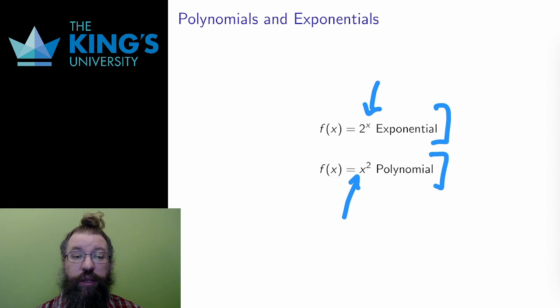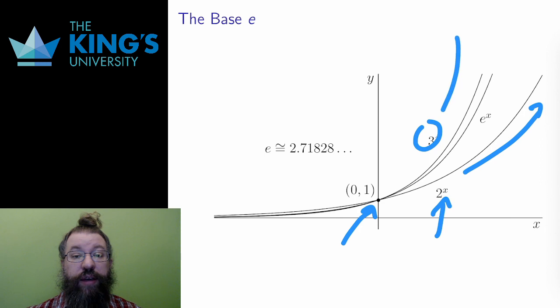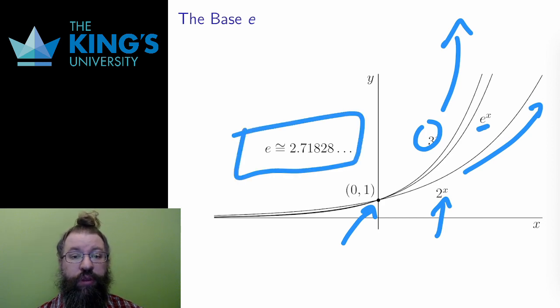I've said that any positive number a can be the base of an exponential. The larger the base, the faster the exponential grows, though all of them still start at the point 0, 1. On this graph, I've shown 2 to the x and 3 to the x, with 3 to the x clearly growing faster than 2 to the x. In between this, I've drawn e to the x. E is a special irrational number, sometimes called Euler's number. It is approximately 2.71828. For reasons that will be made clear in later weeks, it is by far the most convenient base to use for the exponential.